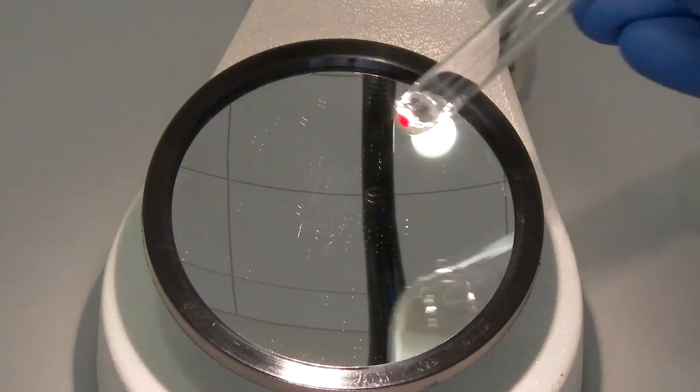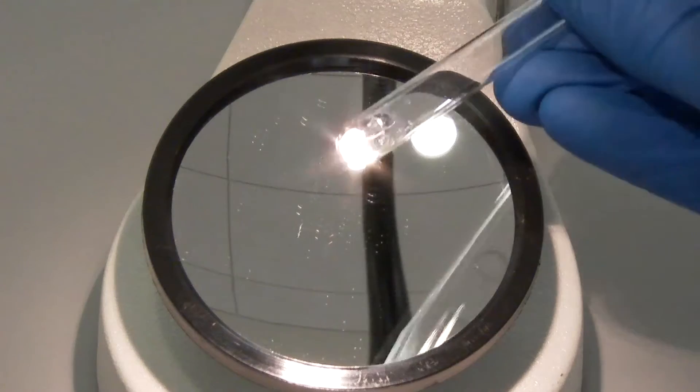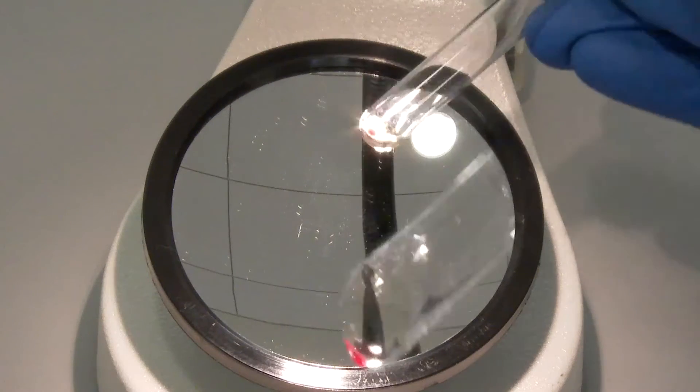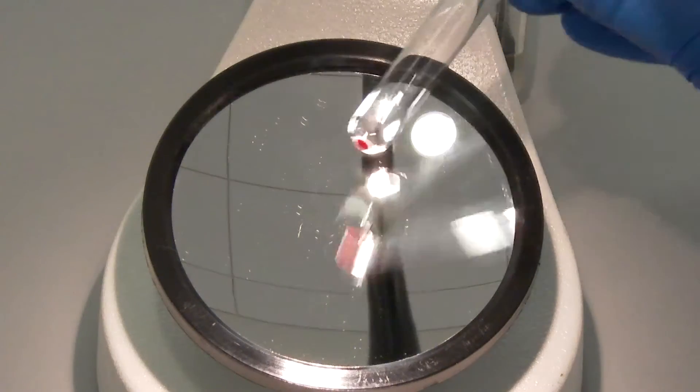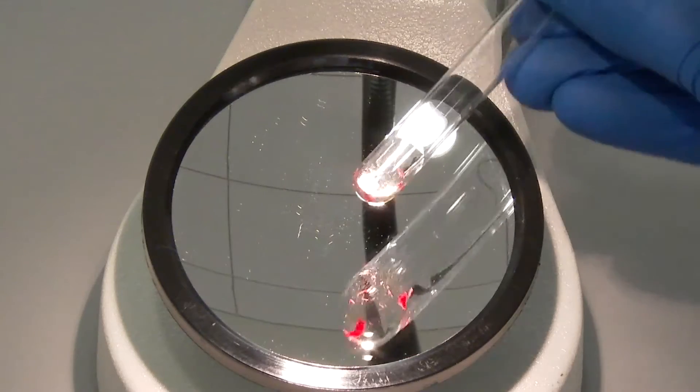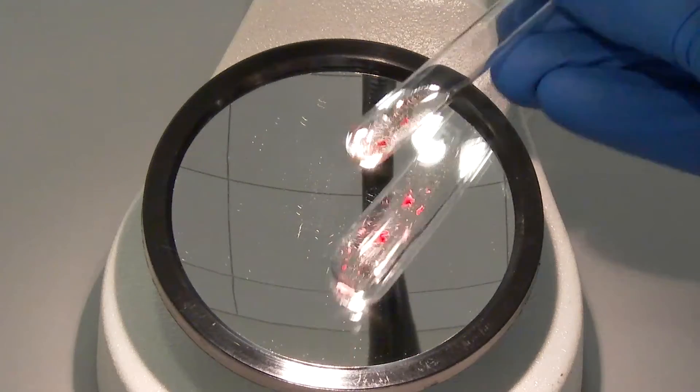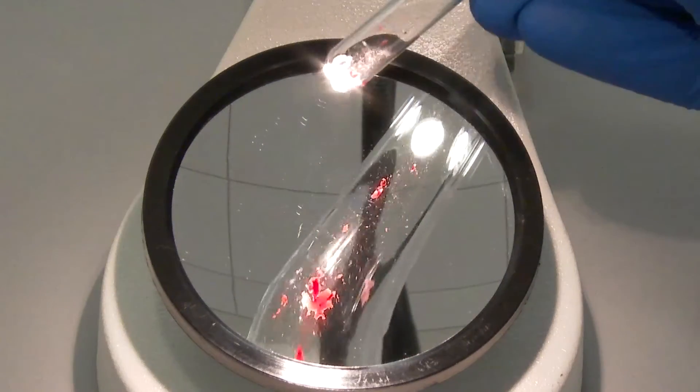Gently rock the test tube back and forth so that the supernatant washes across the cell button. Observe the edge of the cell button and look for the presence of a jagged edge or a smooth edge with free floating cells washing off the button.